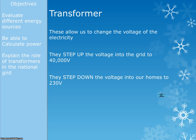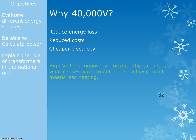We use transformers in the national grid to step up the voltage — that's the proper name — into the grid to 40,000 volts. When electricity is travelling through the wires on the pylons, it's at 40,000 volts. Transformers then step down the voltage into our homes to 230 volts. We use 40,000 volts because it means less energy loss, which makes it cheaper. For the higher paper, you need to know that high voltage means low current, and current is what causes wires to get hot. So low current means less heating, which means we lose less energy.